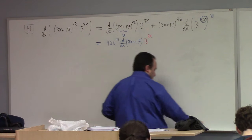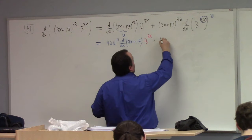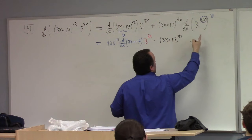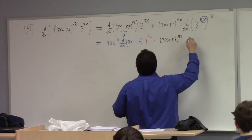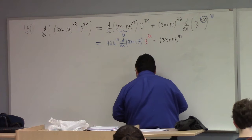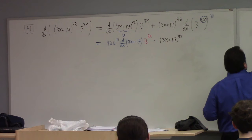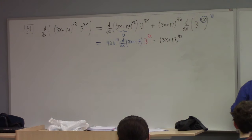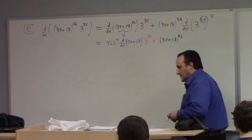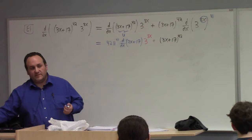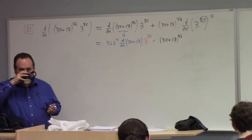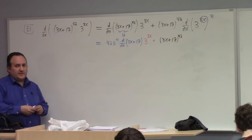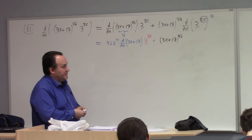Then I've got plus this lovely (3x + 17)^42. What's the derivative of 3^W? The derivative with respect to x of a^x is the natural log of a times a^x. This is an exponential function — the variable is in the exponent, not the base. Variables in the base: power rule. Variables in the exponent: it's an exponential, so you use the exponential rule.